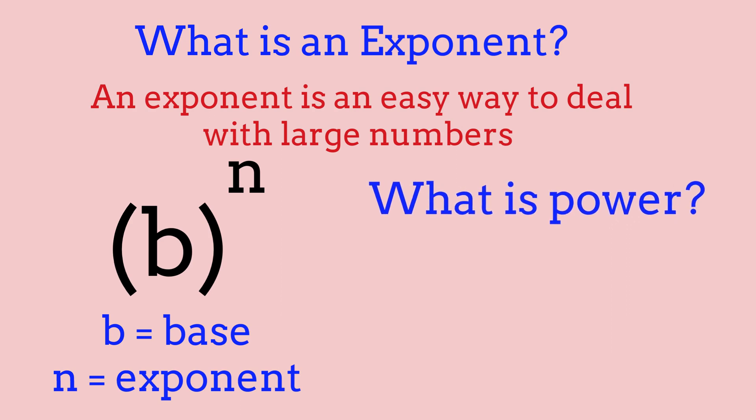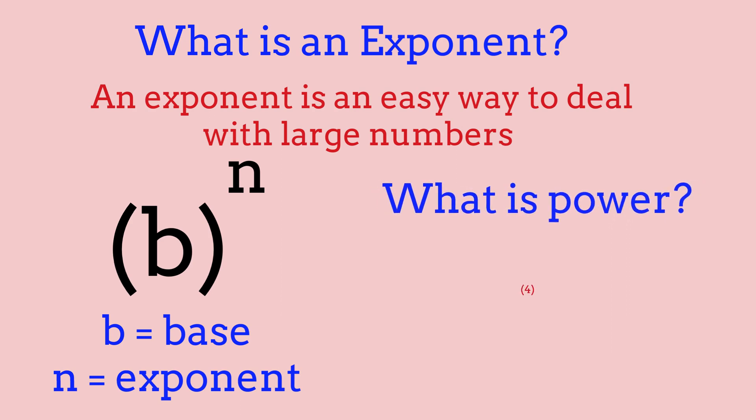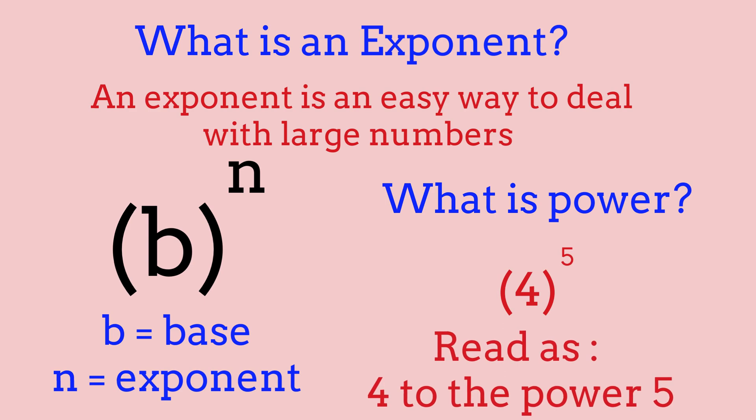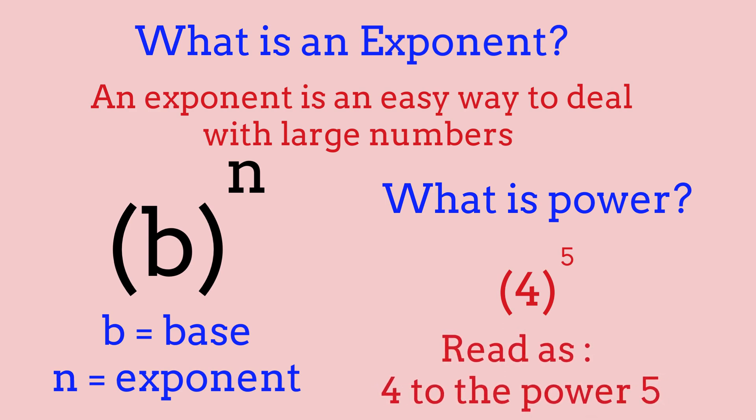But now what is a power? A power is the combination of both the base and the exponent. For example, if 4 was our base and 5 was our exponent, we would read it as 4 to the power of 5. Another example: 6 to the power of 9 — 6 is the base, 9 is the exponent, and the power is 6 to the power of 9. This is a very common mistake: many people think of exponents as powers, but exponents and powers are not the same things. We read powers as '3 to the power of 2' or '3 raised to the power of 2', while an exponent is just that number above the base.